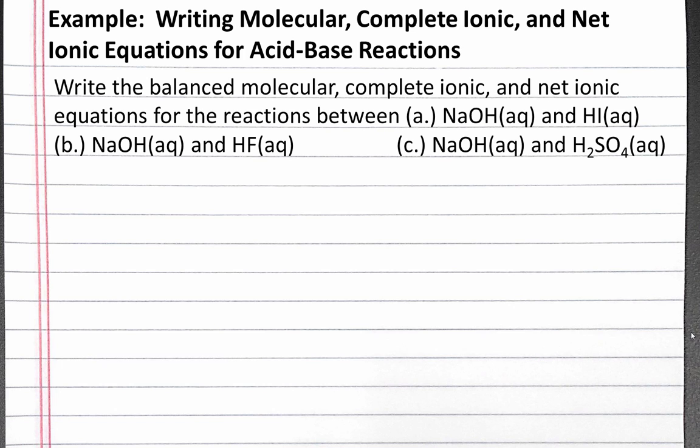In this example problem, we'll write the molecular, complete ionic, and net ionic equations for three different acid-base reactions. Our problem reads: write the balanced molecular, complete ionic, and net ionic equations for the reactions between A, sodium hydroxide and hydroiodic acid; B, sodium hydroxide and hydrofluoric acid; and C, sodium hydroxide and sulfuric acid.